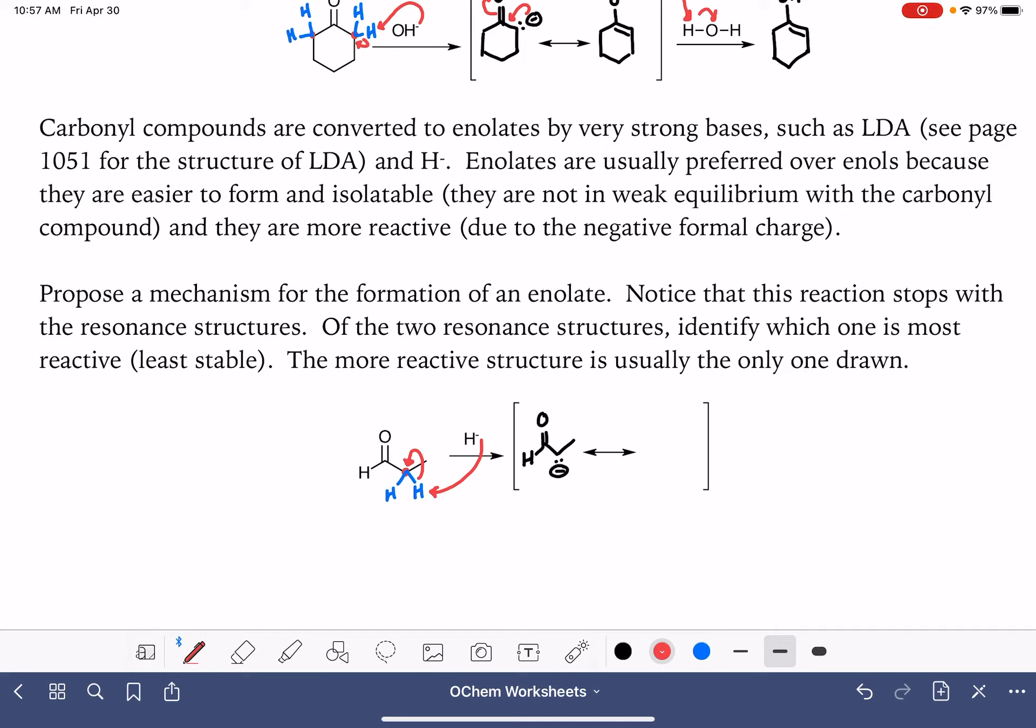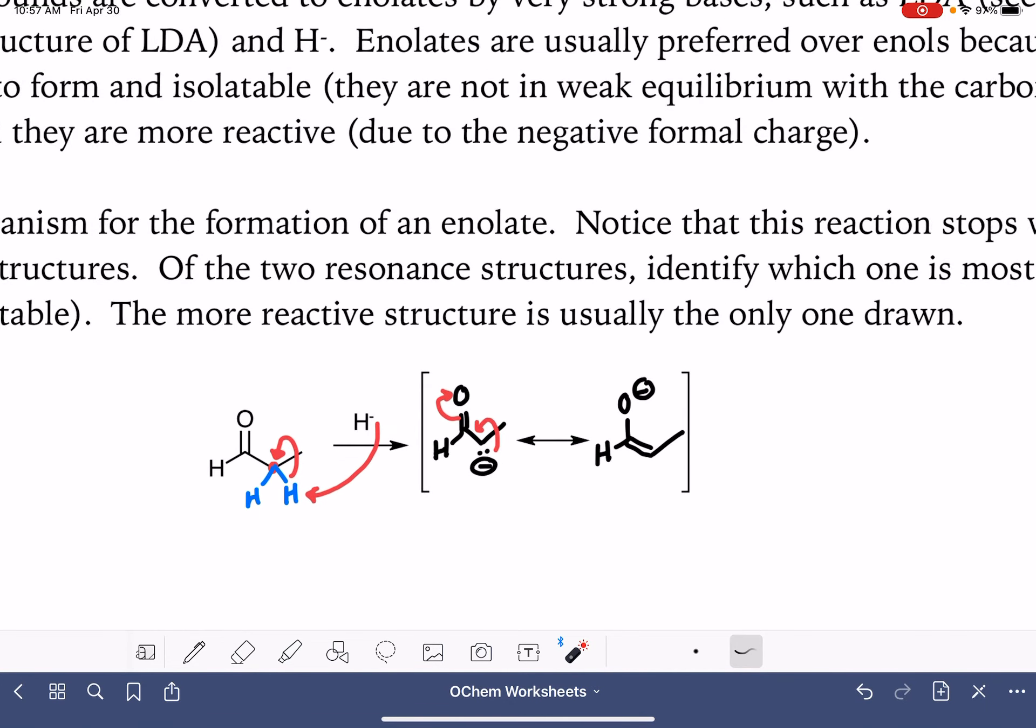We'll have a lone pair of electrons right there and a negative charge. And then we'll also have a resonance structure where we delocalize that lone pair of electrons up onto the oxygen atom like this. And this is all that we have for this particular molecule, just these two resonance structures.